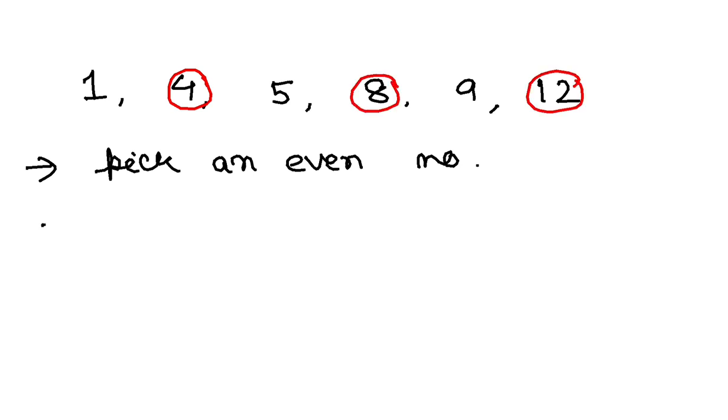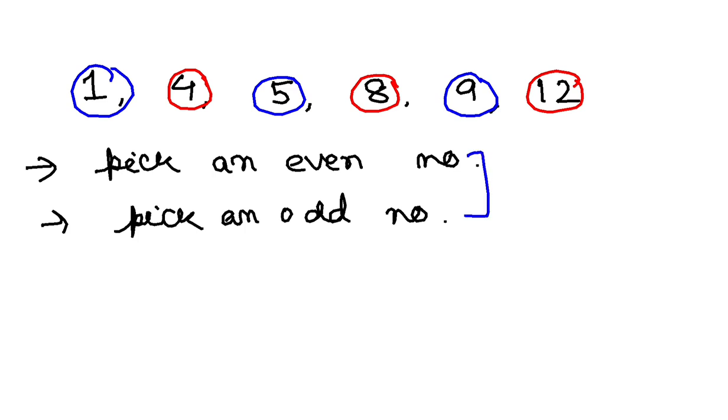Now if I tell you, pick an odd number. How many odd numbers are there? 1, 5, and 9. So what does it tell you? There is an equal chance of getting an even number and equal chance of getting an odd number. That means this is a case of equally likely outcomes.